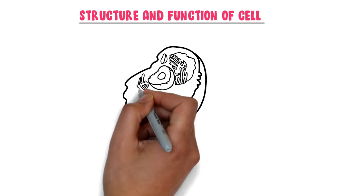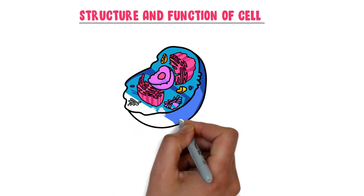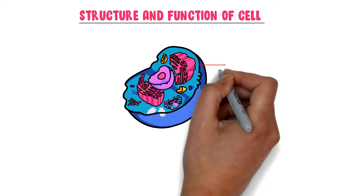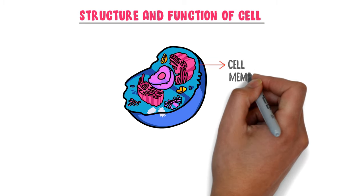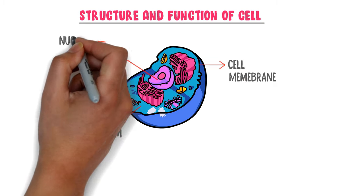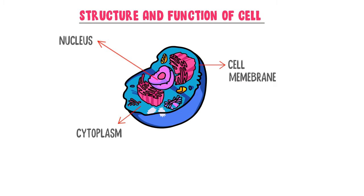What is the structure and function of a cell? There are three common parts that exist in any cell: cell membrane, cytoplasm, and nucleus or DNA.